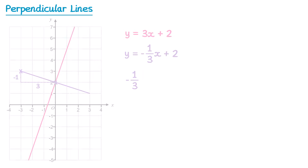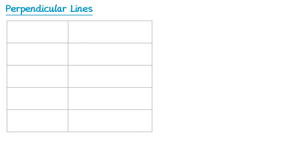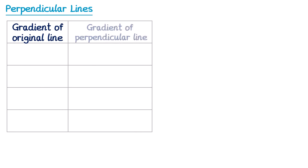Let's have a look at some more examples. If we write all of these in a table, putting the gradient of the original line (the red one) and the gradient of the perpendicular one (the purple one): for the first example the original gradient was 2, and the perpendicular was negative one half. For the second line, the gradient was 3 and the perpendicular was negative one third.